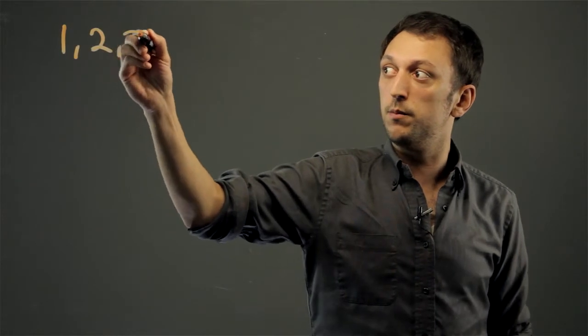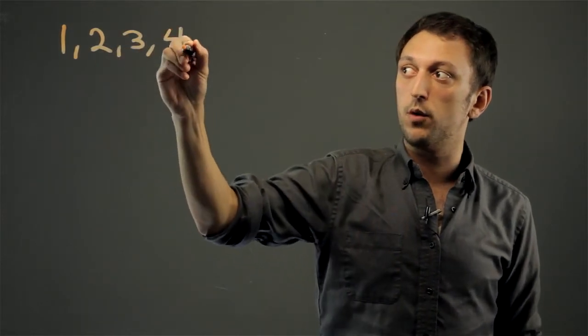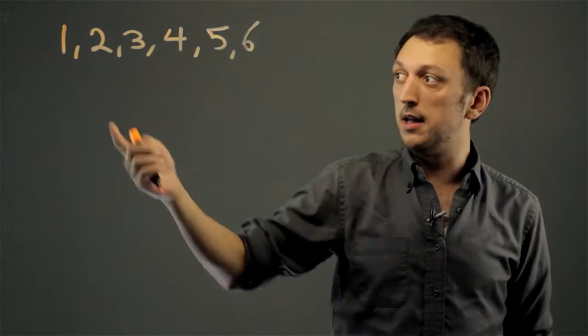When you roll a die, you can get a 1, 2, 3, 4, 5, or 6. That's it.